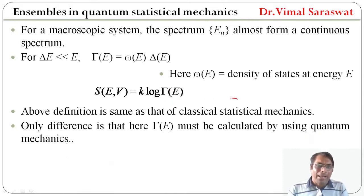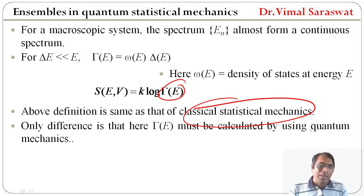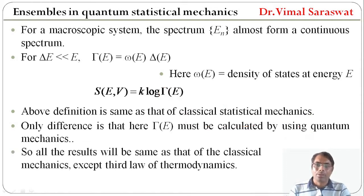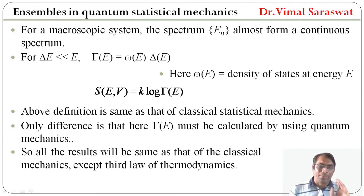In classical statistical mechanics, gamma(E) is calculated by using classical mechanics, whereas in quantum statistical mechanics it is calculated by quantum mechanics. All the results will be the same as those of classical mechanics, except for the third law of thermodynamics.